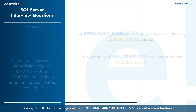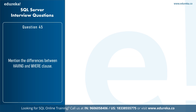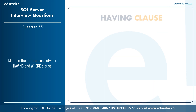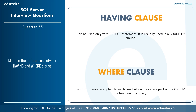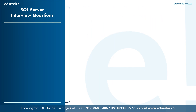The next question is: mention the differences between HAVING and WHERE clause. The HAVING clause is used only with the SELECT statement and with a GROUP BY function in a query. The WHERE clause is used without GROUP BY and is applied to each row before they are part of the GROUP BY function. Also, whenever GROUP BY is not used, HAVING behaves like a WHERE clause.